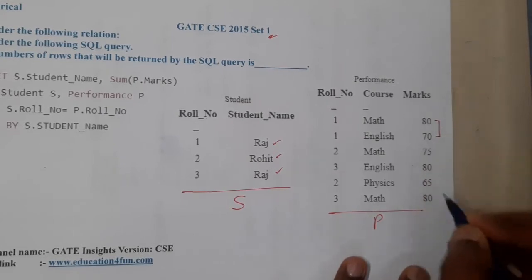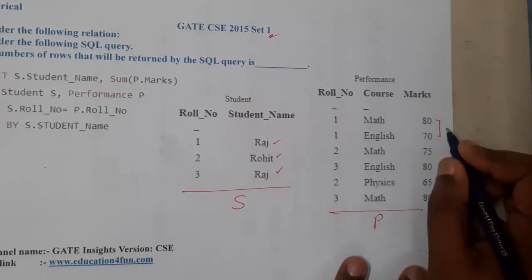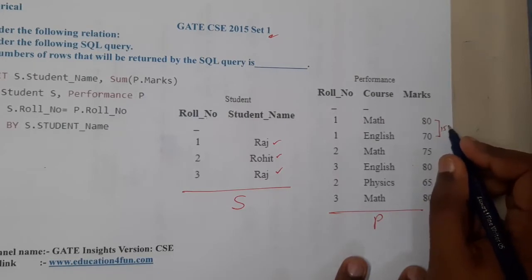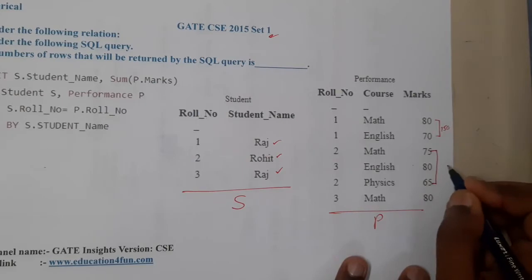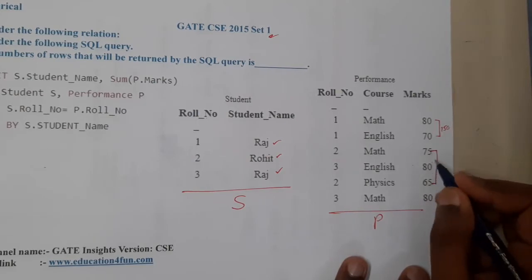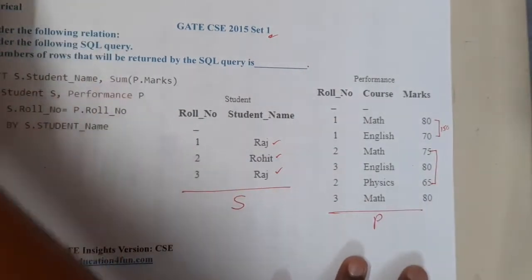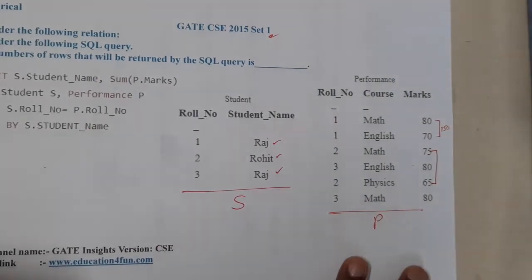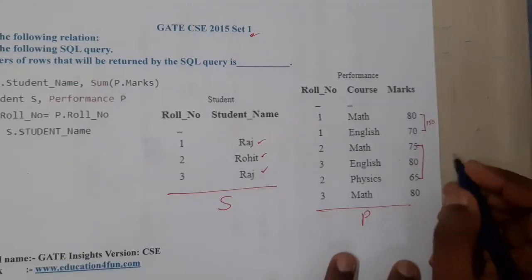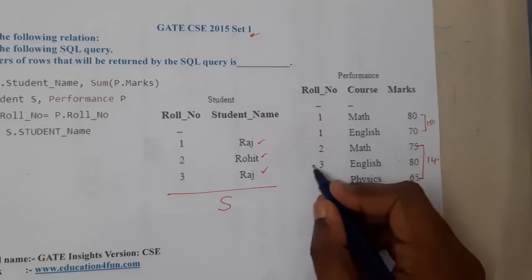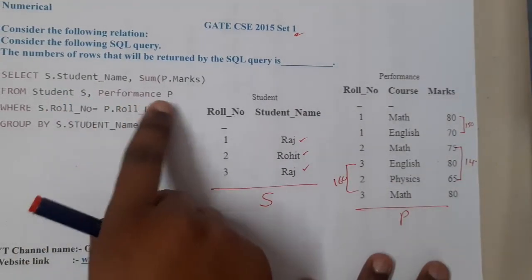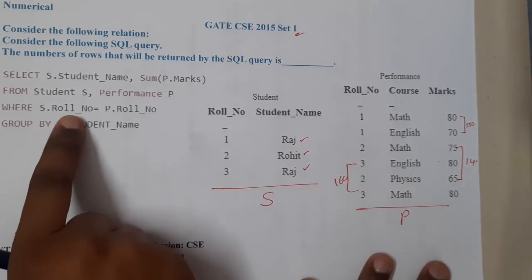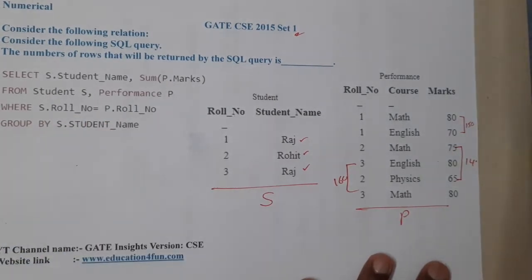For student 1, the sum of marks is 8+7, giving 15 (i.e., 150). For student 2, who wrote two exams — Math and Physics — the sum is 75+65 = 140. Similarly, 80+80 = 160. The query joins student table s and performance table p where s.roll_number equals p.roll_number, then uses GROUP BY student_name.